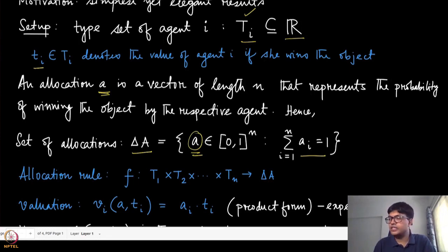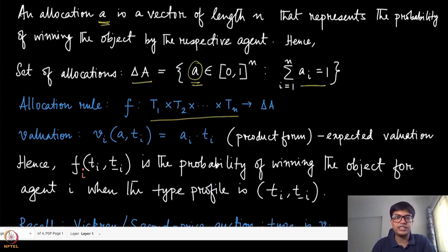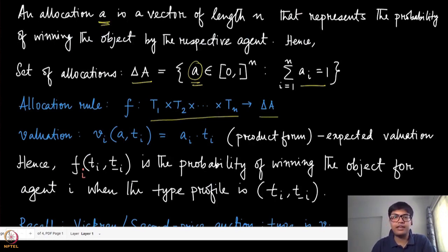The allocation function maps the Cartesian product of all the typesets to the set of allocations, where the set of allocations is this simplex over the set A.